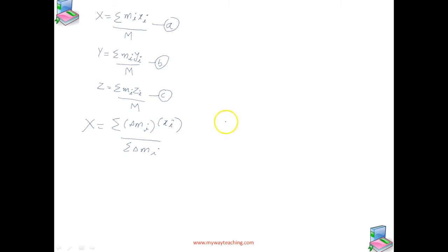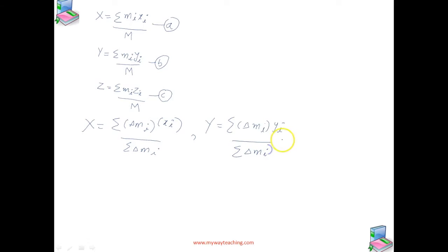The approximate center of mass X coordinate is given by sigma delta Mi times Xi divided by sigma delta Mi. Similarly, we can consider Y as sigma delta Mi times Yi divided by sigma delta Mi, and Z is equal to sigma delta Mi times Zi.